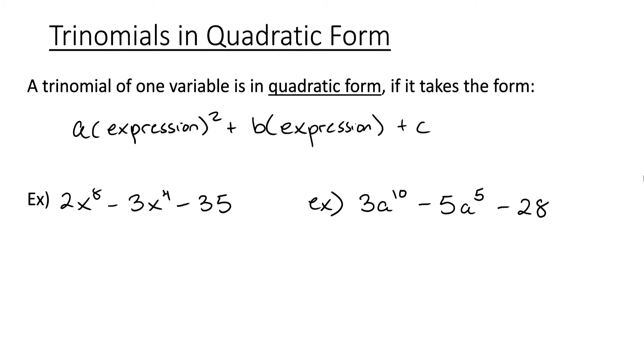Now we'll be talking about trinomials in quadratic form. A trinomial of one variable is in quadratic form if it takes on the form A times some expression squared plus B times the same expression plus C.